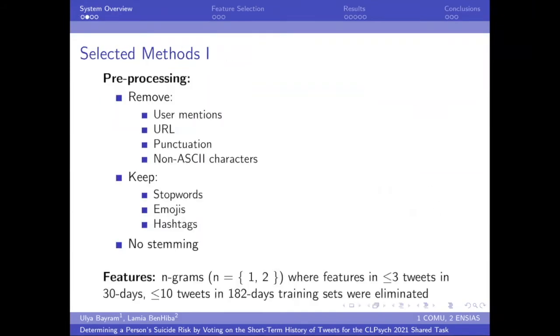For pre-processing, we applied standard approaches as you can see here, but we kept stop words, emojis, and hashtags. And we did not apply any stemming. As features, we extracted n-grams that include unigrams and bigrams, and we eliminated infrequent features from each set.